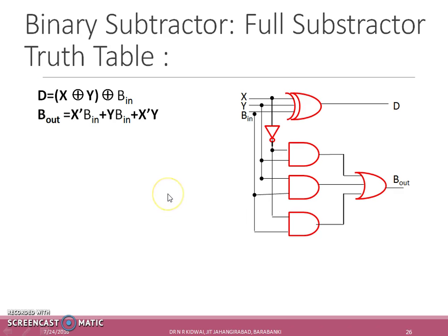Based on the expressions, full subtractor circuit can be formed using a three-input XOR gate, three AND gates, and one OR gate along with one inverter.